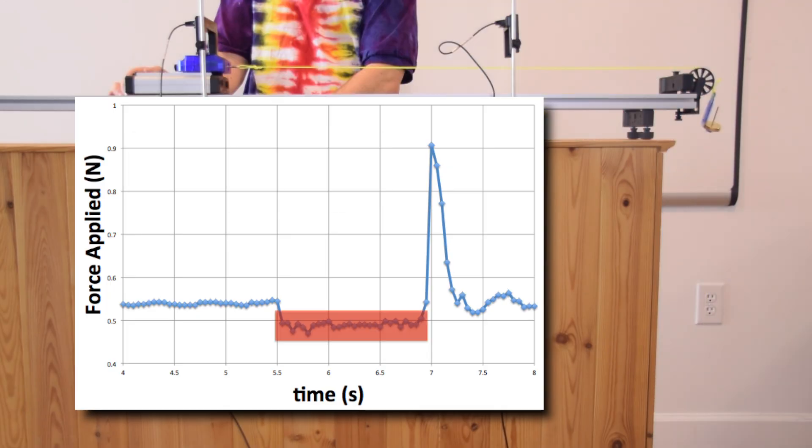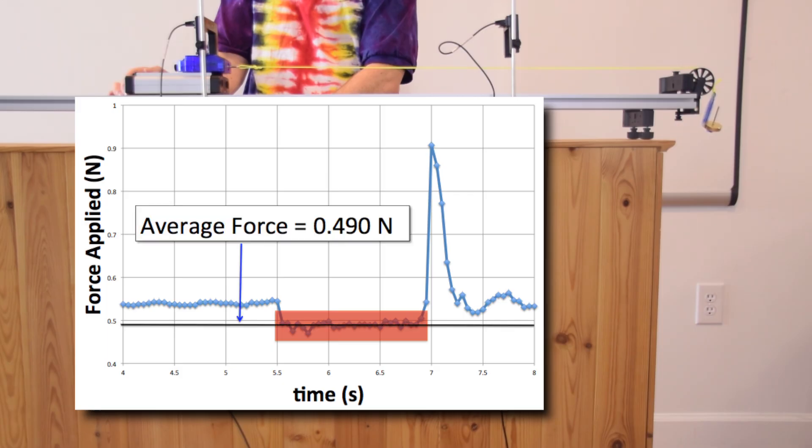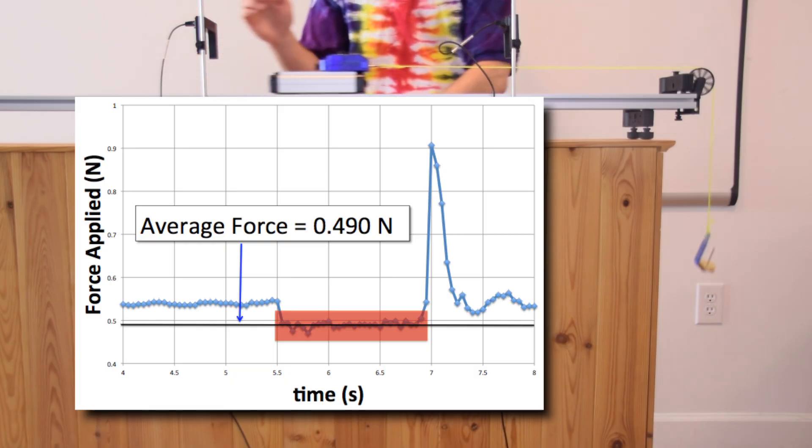You can see this highlighted data is the force applied to the cart while the cart is accelerating, and that force is almost constant until I stop the cart. We can then determine the average force while the cart is in motion and it works out to be 0.490 newtons.